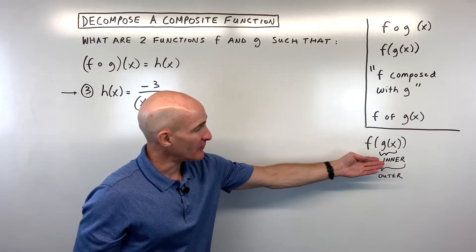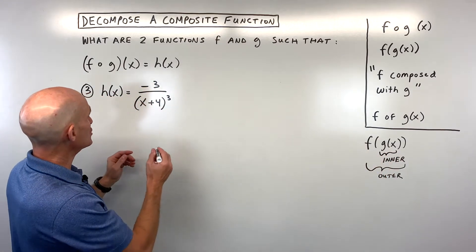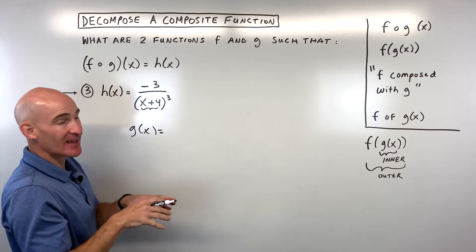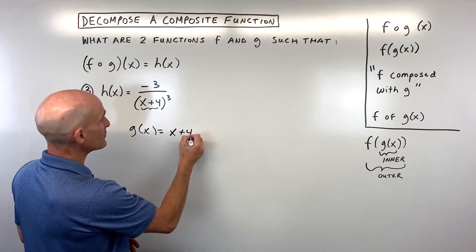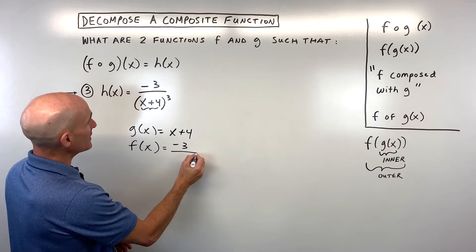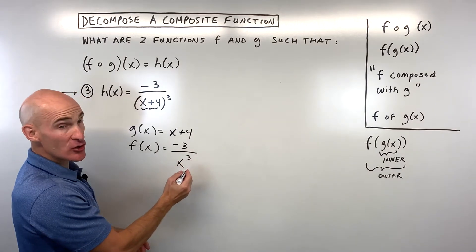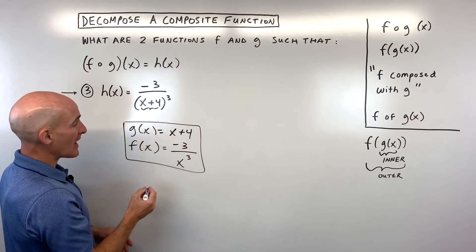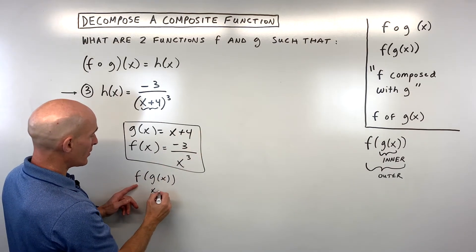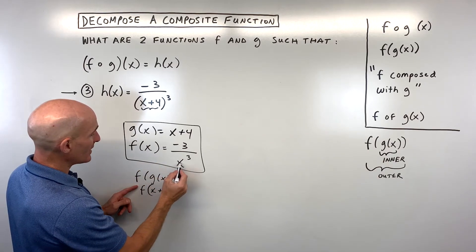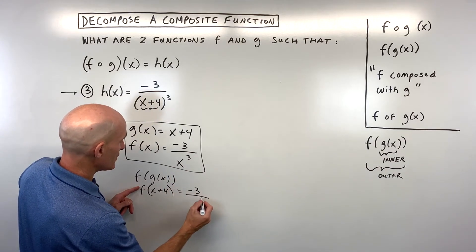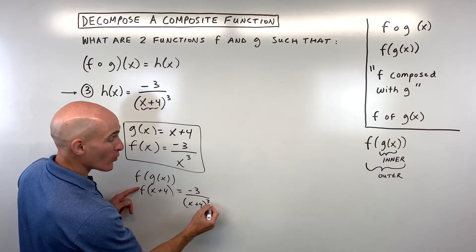Thinking about inner and outer: g of x represents the inner function. In this case, the quantity x plus 4 is on the inside — that's just one possibility. The outer function f of x equals negative 3 over x cubed. To check by composition: g of x equals x plus 4, which goes in place of x on the right, giving negative 3 over x plus 4 to the third power.